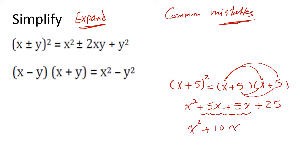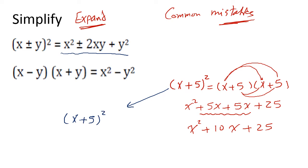So the result is x² + 10x + 25. But there is another solution using a rule. If you have (x + 5)², you expand it into three terms.